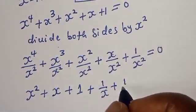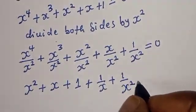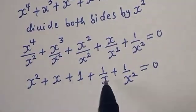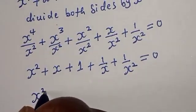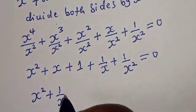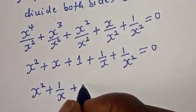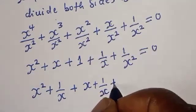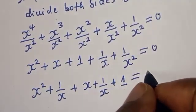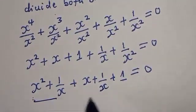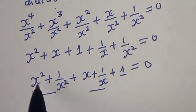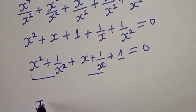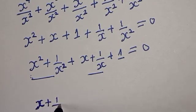After dividing through by x squared we get: x squared plus x plus 1 plus 1 over x plus 1 over x squared equals 0. We can group these: x squared plus 1 over x squared together, and x plus 1 over x together, plus 1 equals 0.